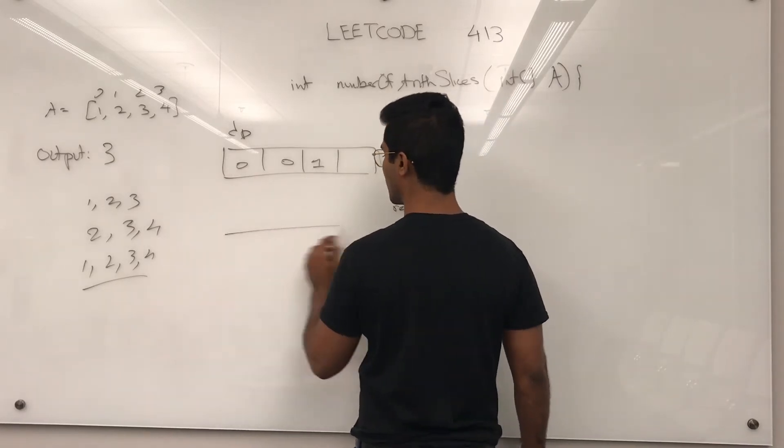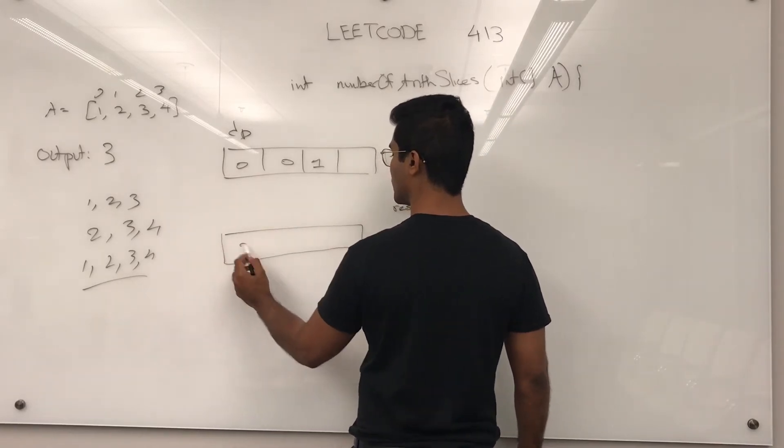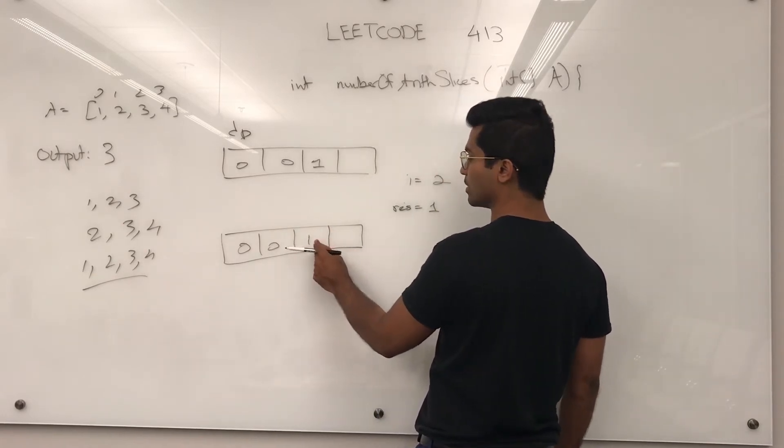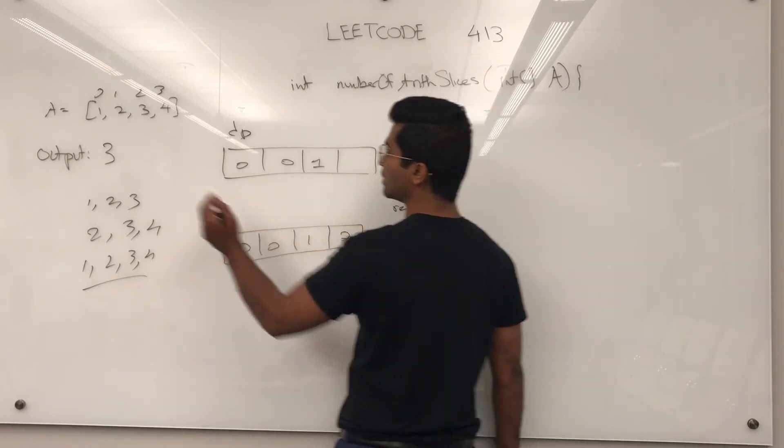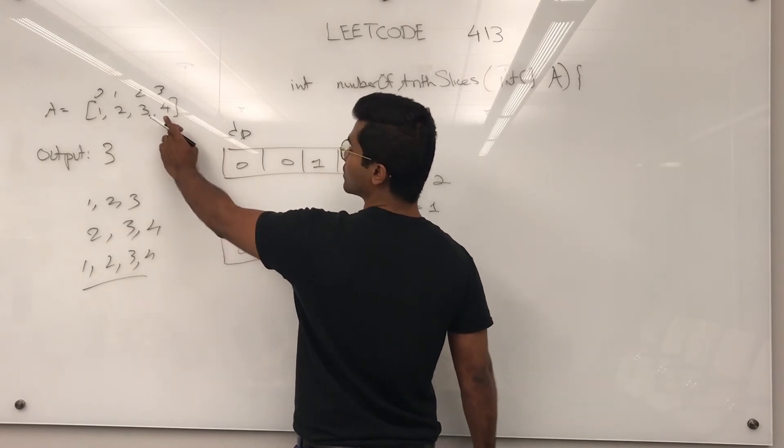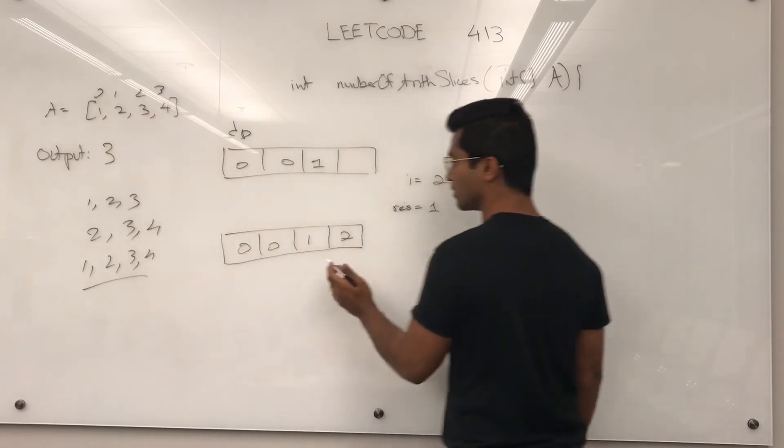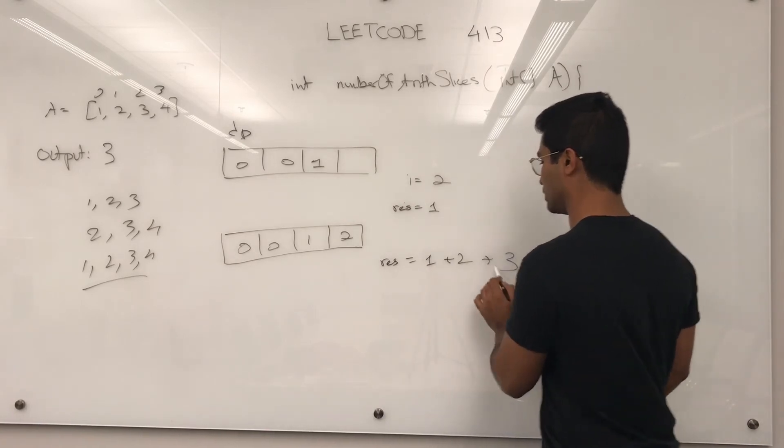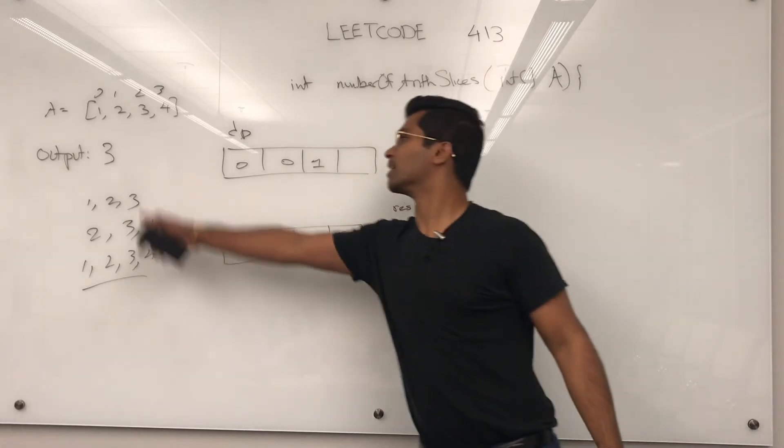Next iteration, this guy is going to be the previous one plus 1, so 2 is going to be, because 4 minus 3 is the same as 3 minus 2, and res is going to be 1 plus 2, which is a total of 3, and that's the output they want.